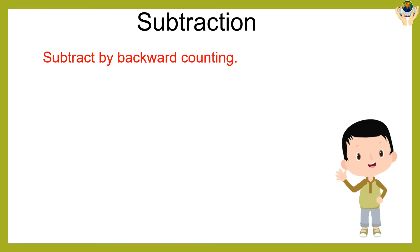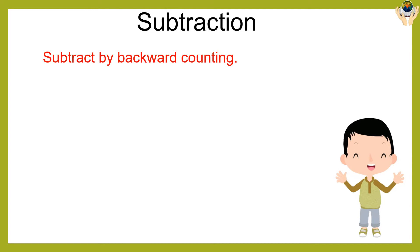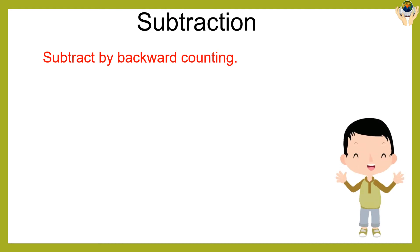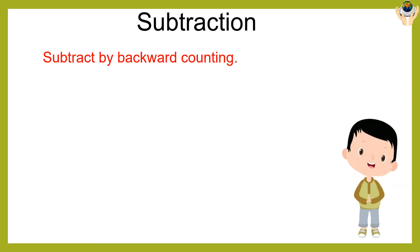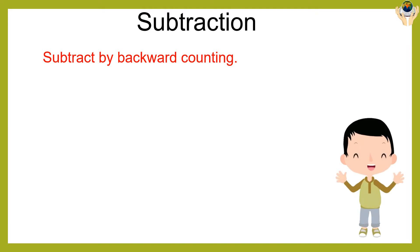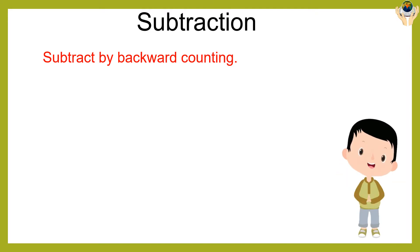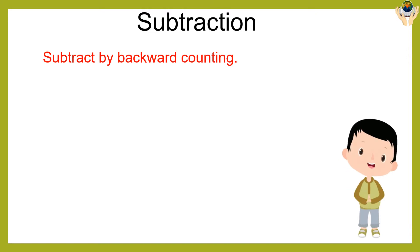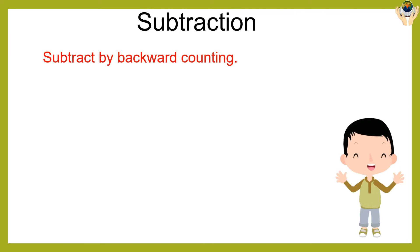Now we are going to do subtraction by backward counting. What is backward counting? Five, four, three, two, one — this is backward counting. So instead of going one, two, three, four, we count four, three, two, one.